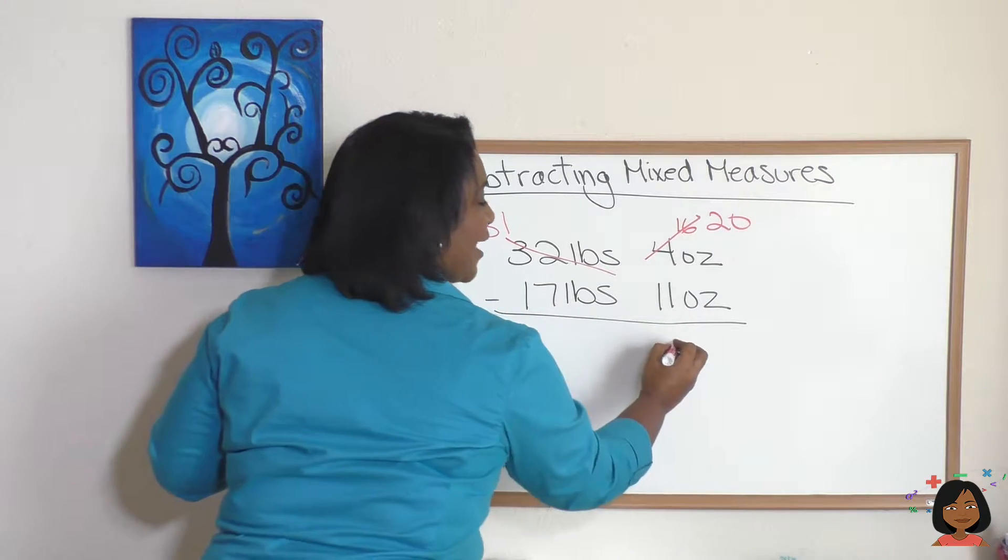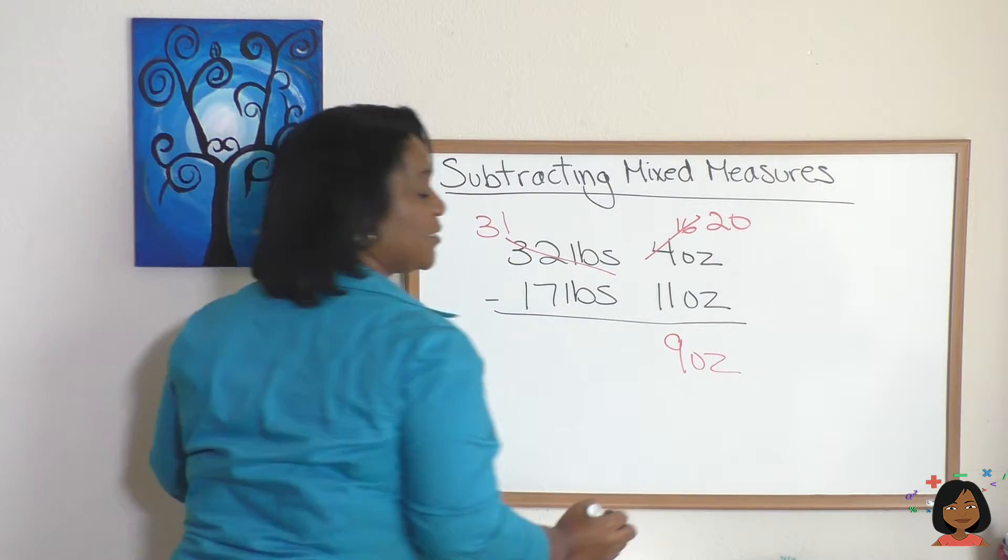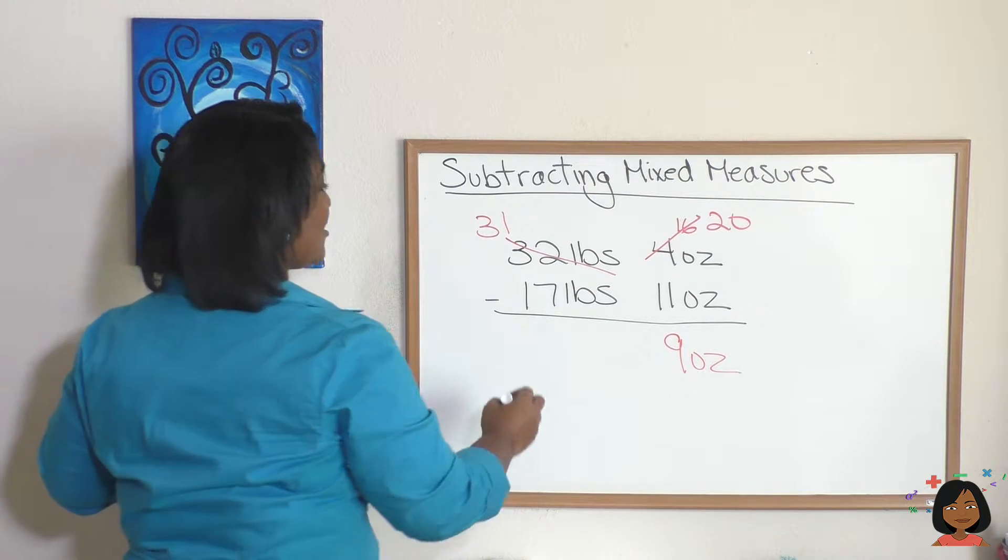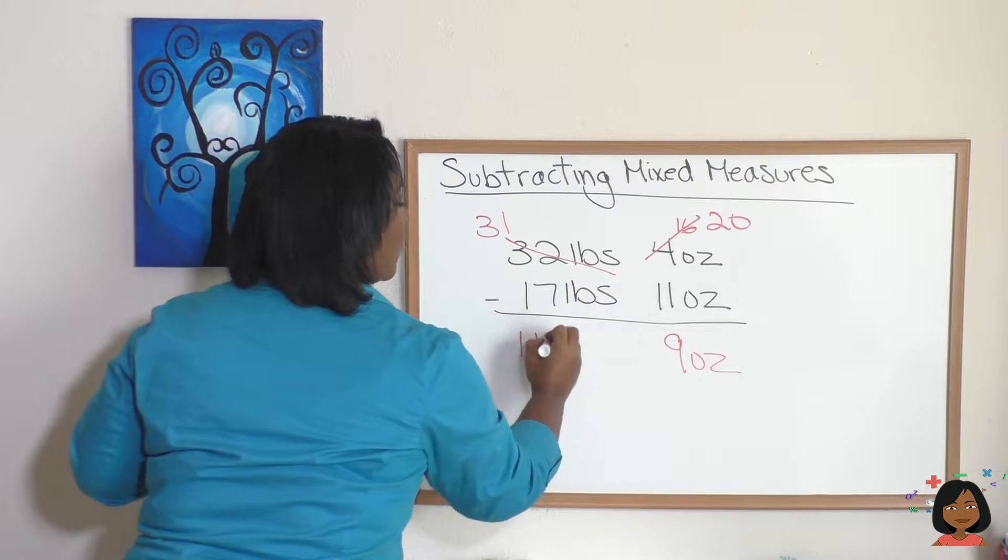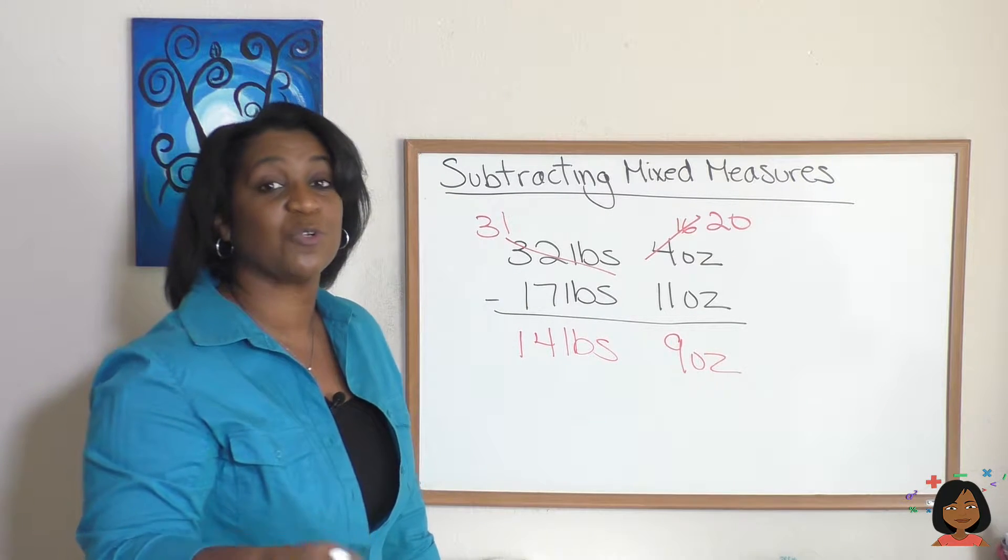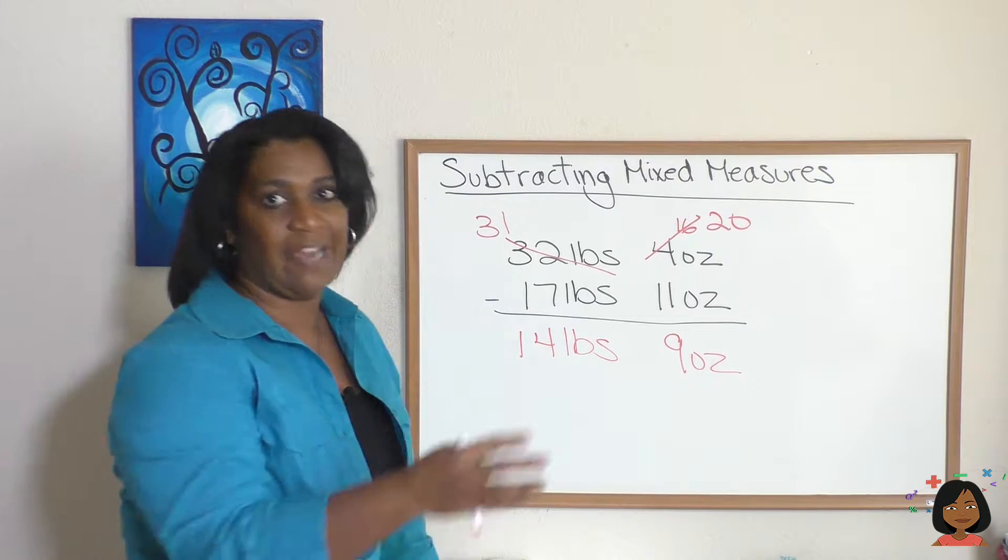Now let's go over to our pounds. 31 minus 17 is going to be 14 pounds. Okay, and that's the process. You just make sure you do a little regrouping and then carry on as normal.